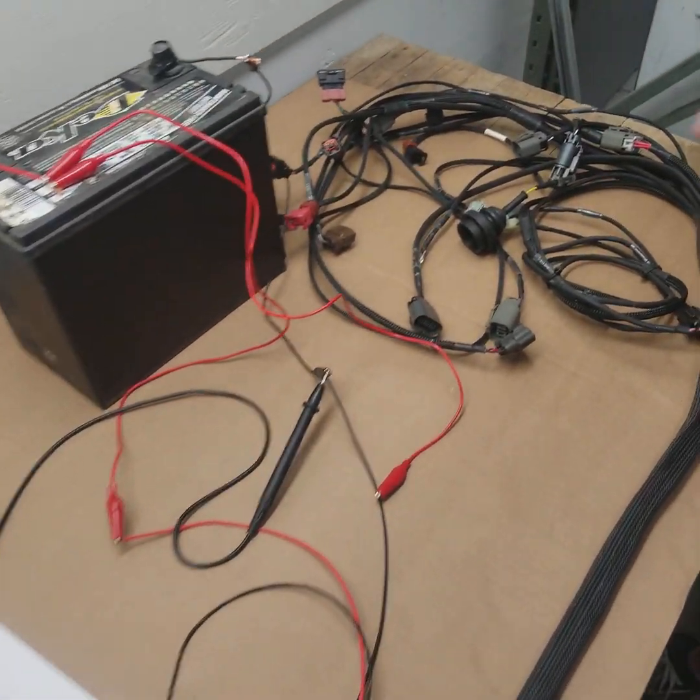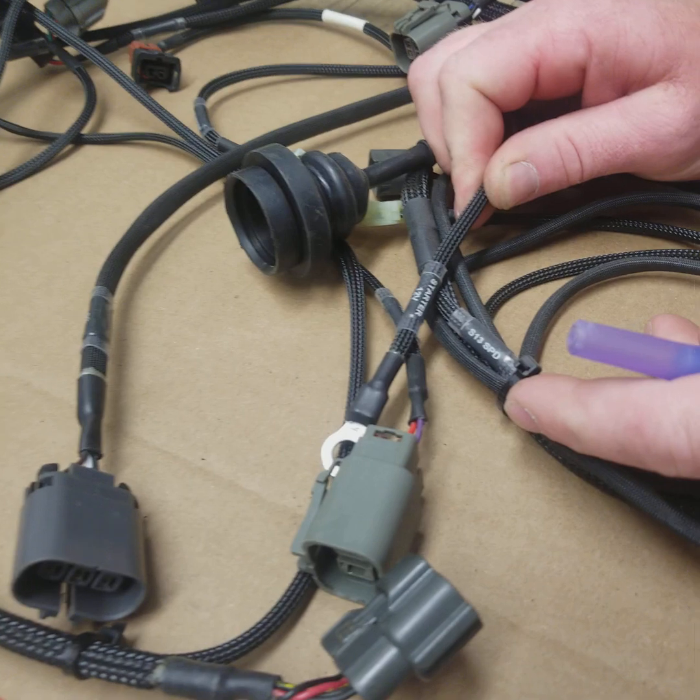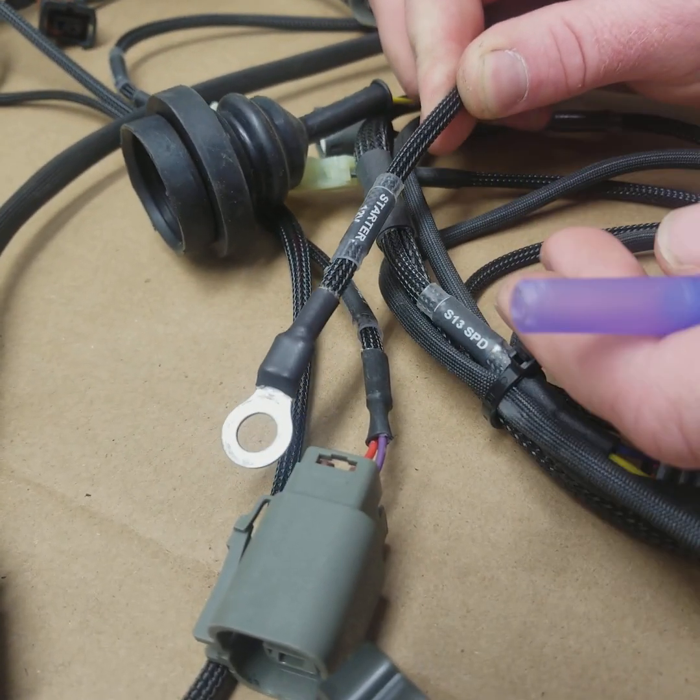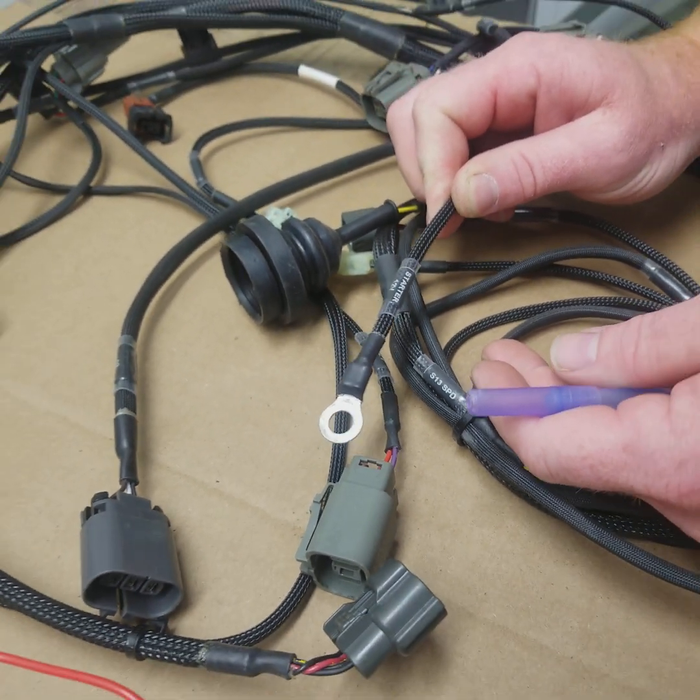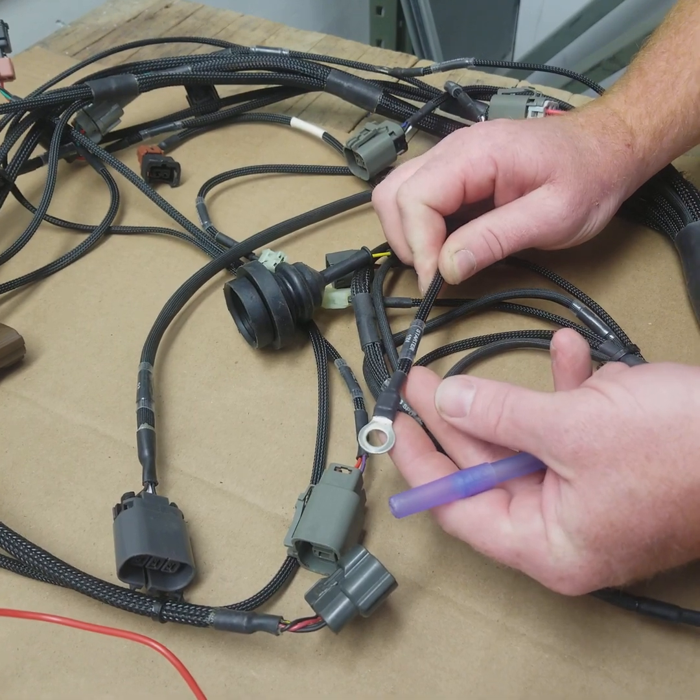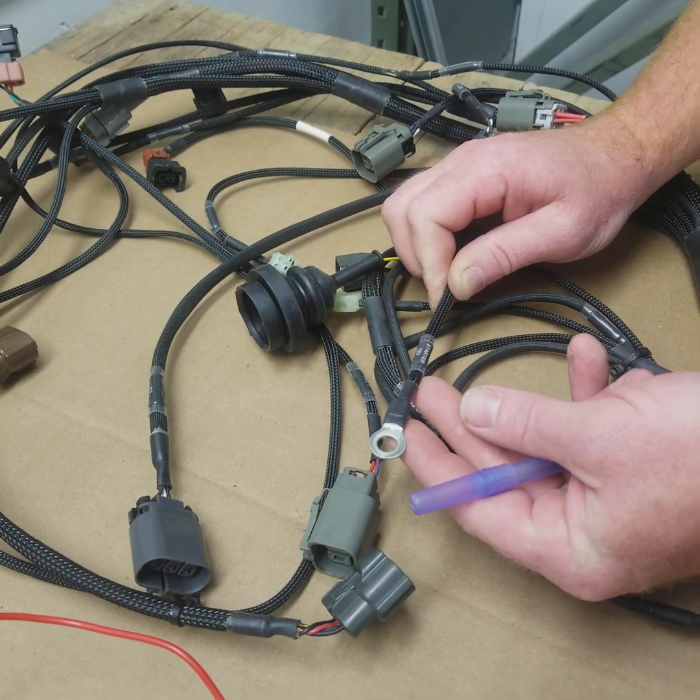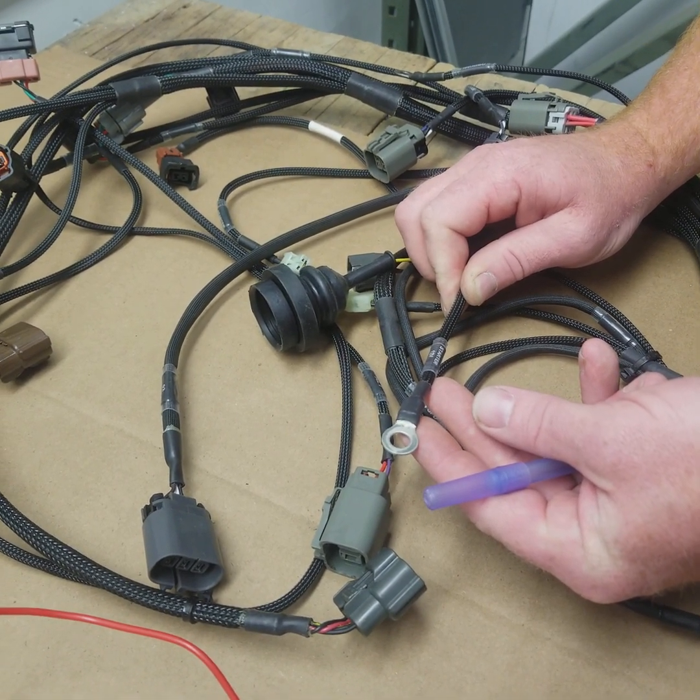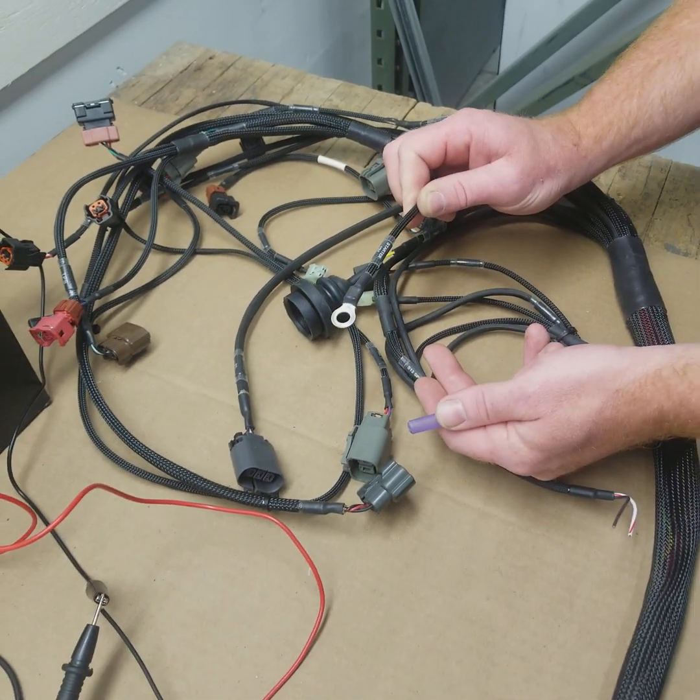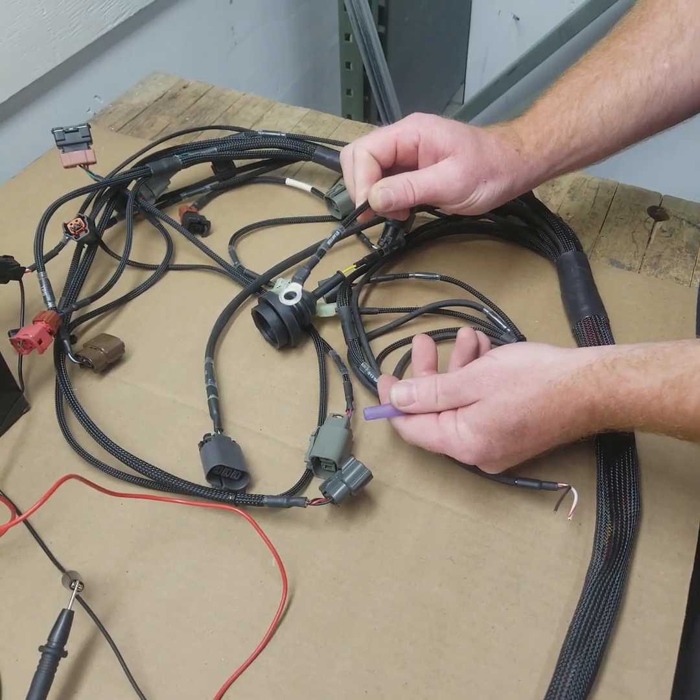First what we're going to look at is our starter 12-volt wire. Now this is attached to the battery stud on the starter. Your starter still needs a cable that goes from the starter to the battery positive. This is just a pickup point for our harness so that we can power the ECU.